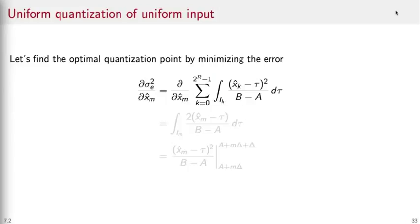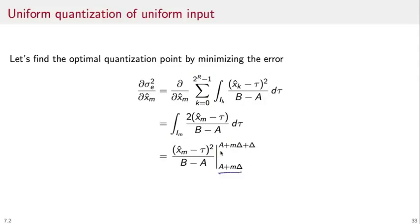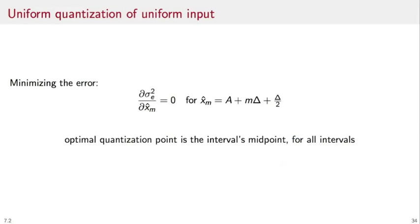In order to find the optimal quantization points, we minimize the mean square error with respect to the quantization points themselves. We take partial derivatives of the error with respect to x hat of m. When we take partial derivatives of the sum, the partial derivative will kill all terms of the sum except the one that depends on the derivation variable. We are left with the integral over the interval i m of 2 times the quantization point minus tau divided by b minus a. We have to compute this integral over the quantization interval number m. We divide this into 2 to the r equal intervals of size delta. In order to minimize the error, we set the partial derivatives to zero for all quantization intervals. And we find that this happens when the quantization point is the interval's midpoint.